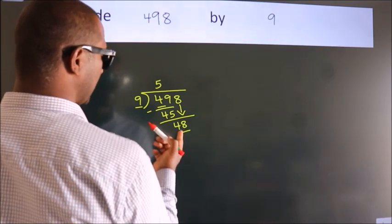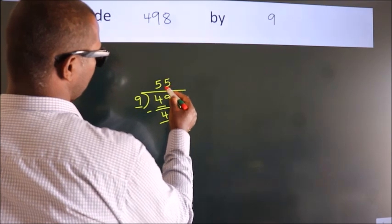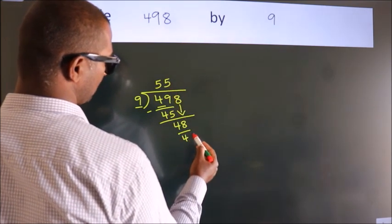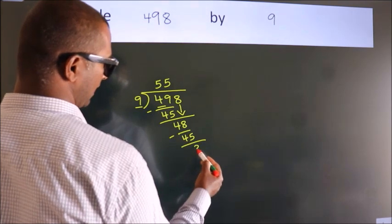A number close to 48 in 9 table is 9 fives, 45. Now we subtract. We get 3.